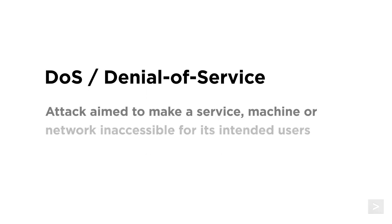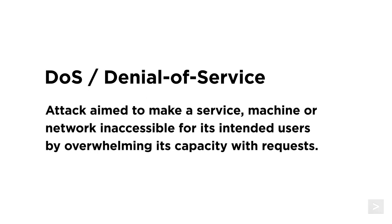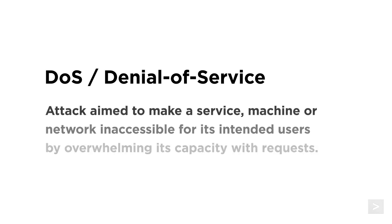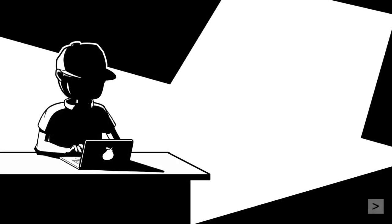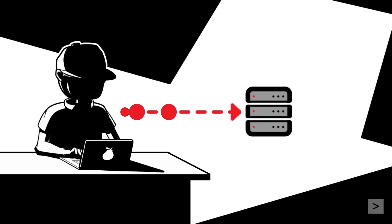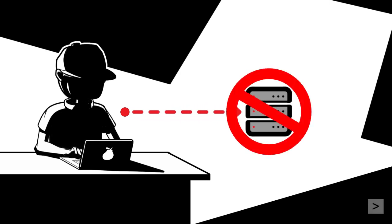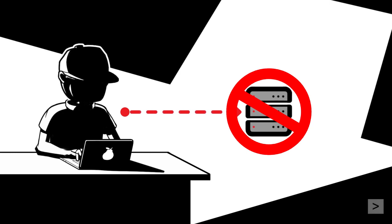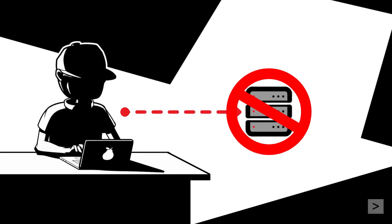DoS attacks aim to make a service, machine, or network inaccessible for its intended users by overwhelming its capacity with requests. At a small scale, it could be a TCP SYN flood attack, where a user sends enough synchronized packets to exhaust the available ports a server has to provide a response. A DoS can also be accomplished using crafted packets that target known vulnerabilities, causing a service or server to completely crash.